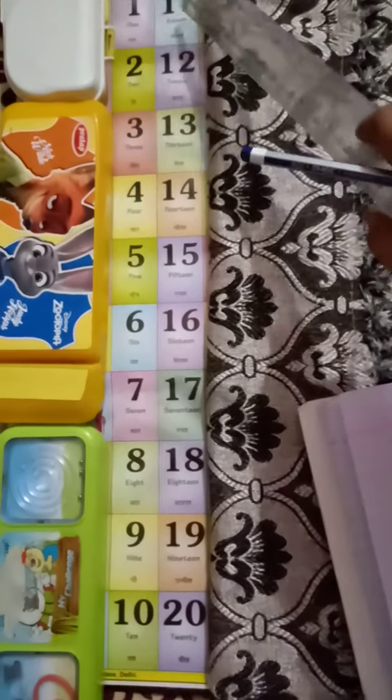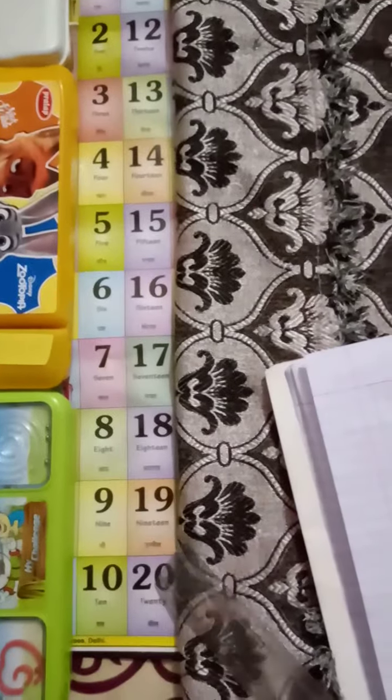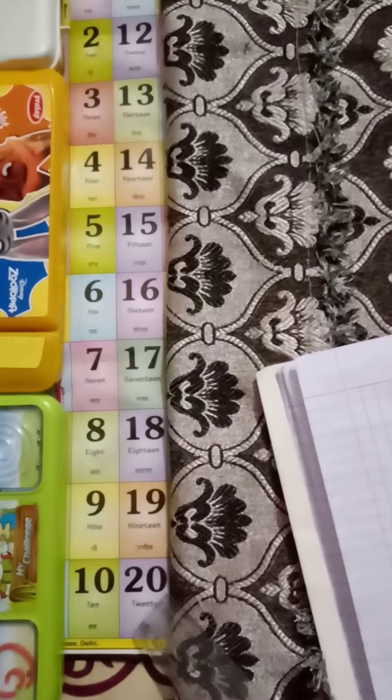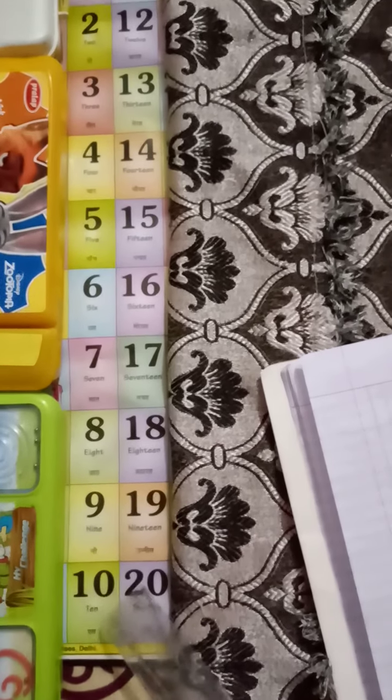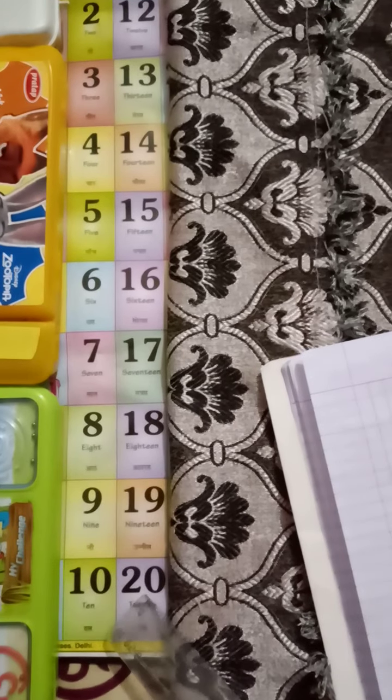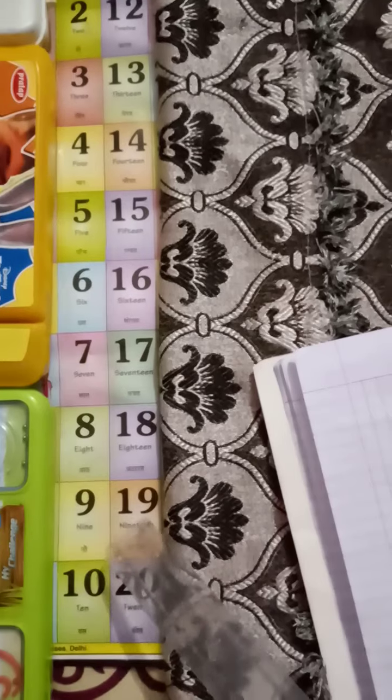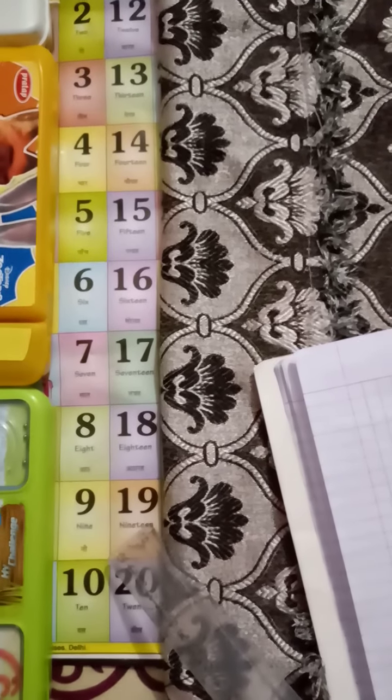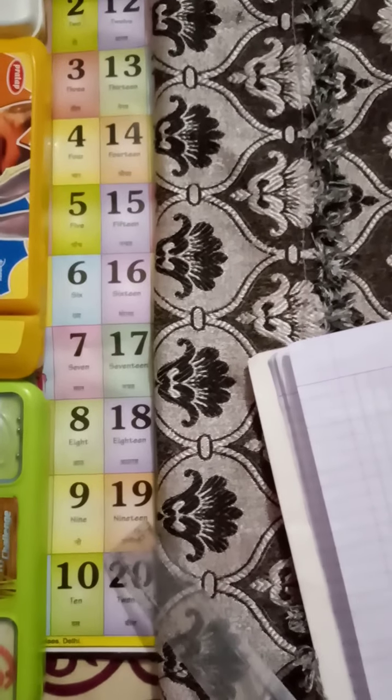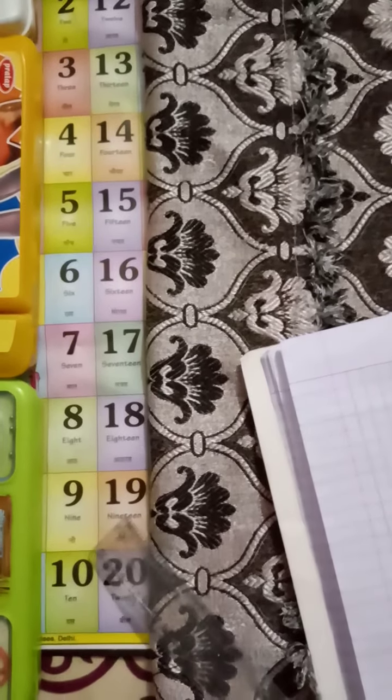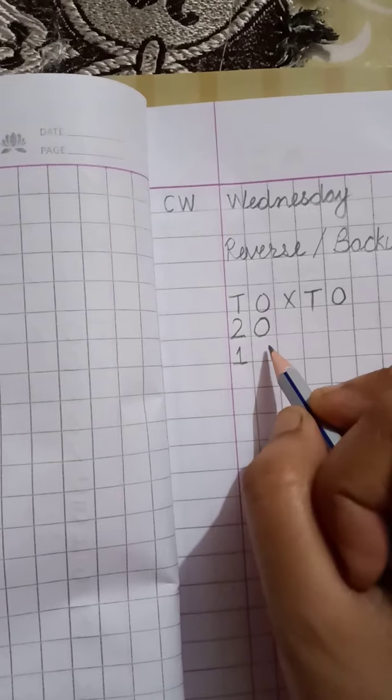This is the number from 1 to 20. इसकी help से हम क्या करेंगे? Reverse counting learn करेंगे. So number 20 के one step back मतलब पीछे. Which number is this? क्या number है ये? Yes. Number 19. तो हम यहां क्या लिखेंगे? Number 19. Very good.